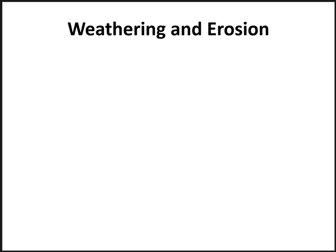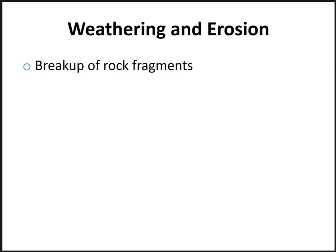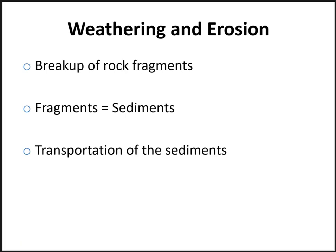Today we're going to be talking about the different types of weathering. When you talk about weathering, you first need to know the difference between erosion and weathering. Weathering is the actual breakup of rock into smaller pieces called fragments, and sometimes those fragments can be called sediments. Once those sediments have been created, they can be transported to another location through the process that we call erosion.